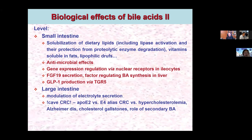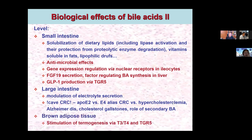At the level of the large intestine, bile acids modulate electrolyte secretion. An interesting dichotomy exists between high cholesterol in blood and high bile acids within the gut, because subjects with ApoE2 genotype have hypercholesterolemia, while those with E4 genotype have a completely different phenotype. Those having high bile acids within the gut lumen have a higher risk of colorectal cancer because of the secondary bile acids formed through microbial conversion of primary bile acids.